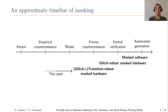This is valid for both masked software and glitch-robust hardware, for which we have already seen in previous CHES editions some works on formal verification or even automated generation. In this work we study hardware masking in the slightly more powerful adversary setting, which is the transition-robust masked hardware, and we aim to design and prove the security of a masking scheme.